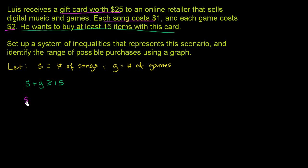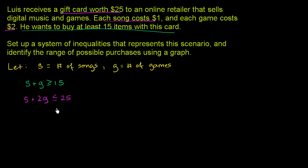So if he buys 10 songs, he's going to spend $10. Plus for each game he's going to spend $2 — plus 2 times the number of games. For example, if he buys 5 songs and 5 games, the 5 songs cost $5 plus 5 times 2 for the games is $10, so it's $15 total. This is how much he spends in dollars on songs and games, and he only has a gift card worth $25. So the total amount he spends has to be less than or equal to $25 — he just can't spend $25.01.